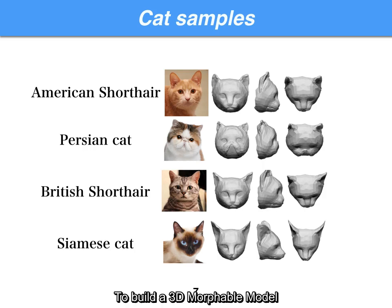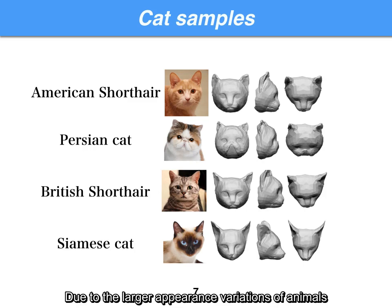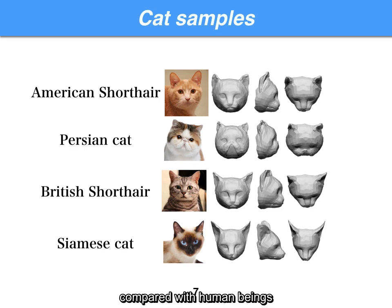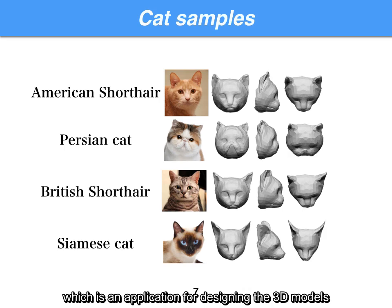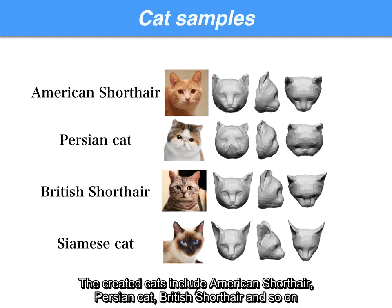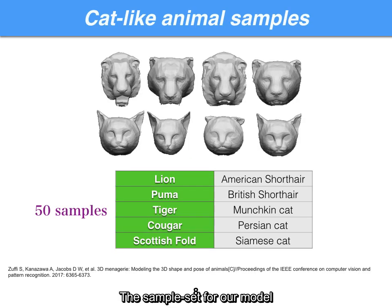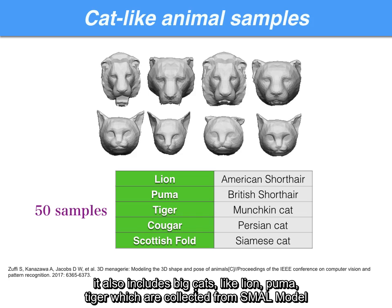To build a 3D morphable model, we need a sample set with a large variety of cat-like animal face shapes. Due to the larger appearance variations of animals compared with humans, the samples should be representative. We manually created 3D meshes of cat faces in ZBrush, an application for designing 3D models. The created cats include American Shorthair, Persian cat, British Shorthair, and so on. The sample set consists of 50 samples. Besides the domestic cat samples, it also includes big cats like lion, puma, and tiger, which are collected from the SMAL model.